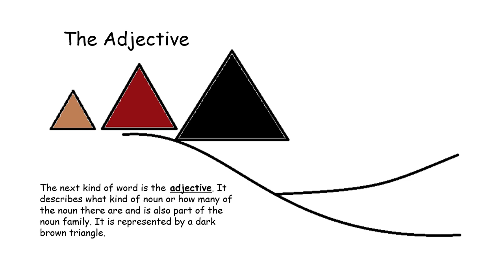The next kind of word is the adjective. It describes what kind of noun or how many of the noun there are and is also part of the noun family. It is represented by a dark brown triangle.